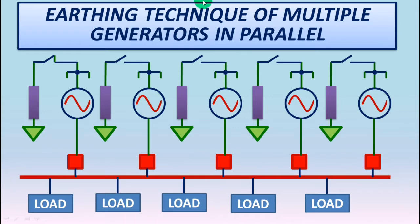If there are several generators running in parallel, only one neutral will be closed at a time. One neutral of one generator will be earthed.